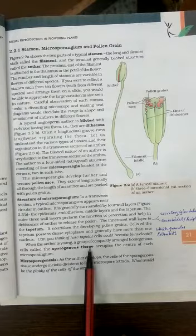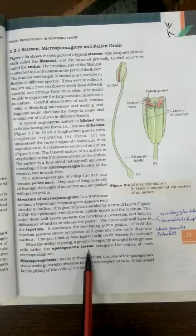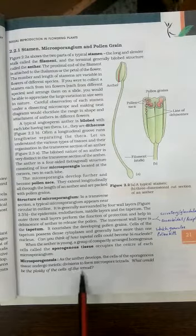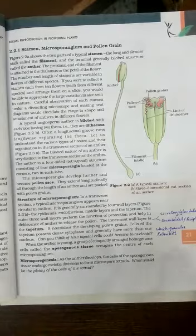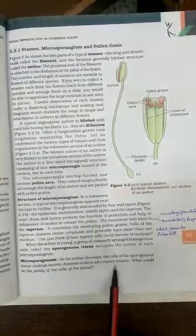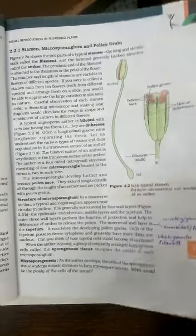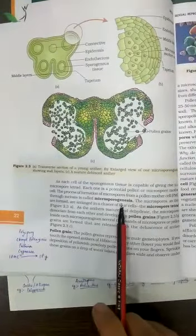Then NCERT says the cells inside are called as the sporogenous cells. And these cells are diploid in nature. And then these cells undergo meiosis to form microspore tetrads. Tetrads are the immature situation. Once they become mature, tetrads will separate from each other and each will develop into a pollen grain. And the next thing is this formation is called as the microsporogenesis.